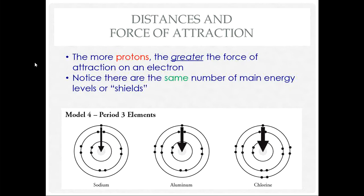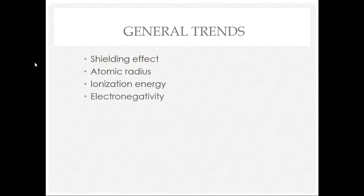Now that we've talked about the two variables, let's go through our periodic trends. The trends we're going to cover are shielding effect, atomic radius, ionic radius, ionization energy, and electronegativity — all physical and chemical properties of atoms.